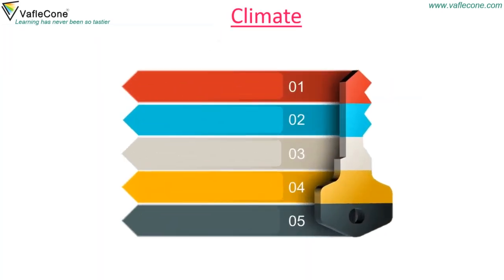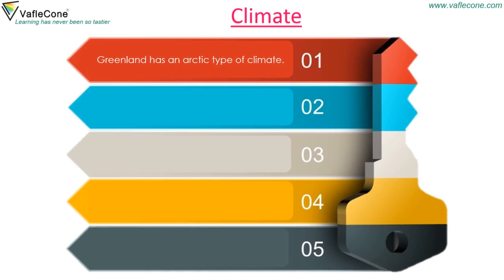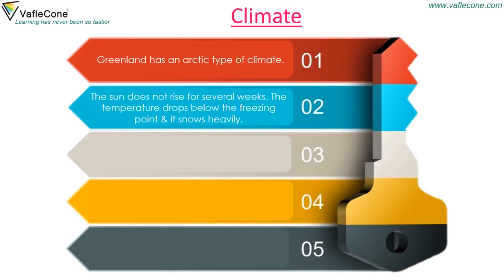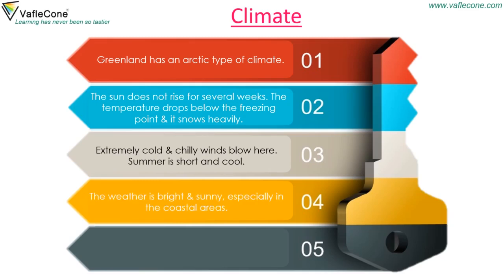Climate. Greenland has an arctic type of climate. The sun does not rise for several weeks. The temperature drops below the freezing point and it snows heavily. Extremely cold and chilly winds blow here. Summer is short and cool. Weather is bright and sunny, especially in the coastal areas. Even though there is continuous sunlight for several weeks, it is still very cold.